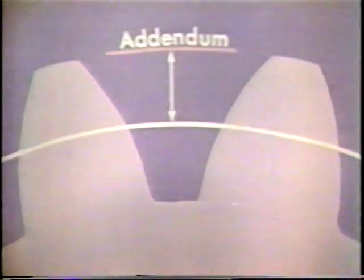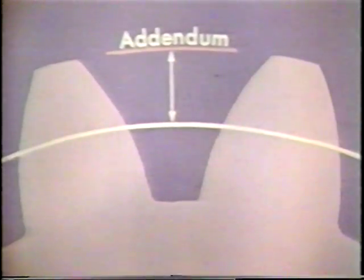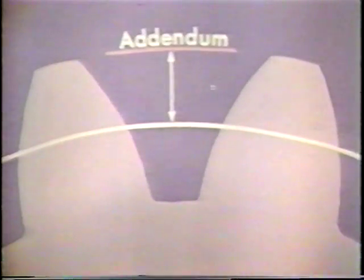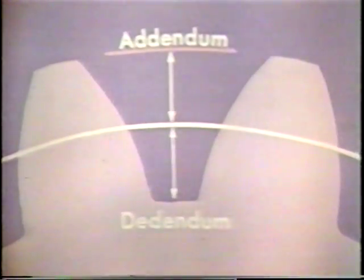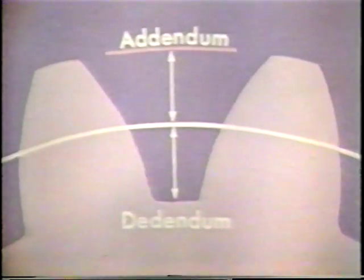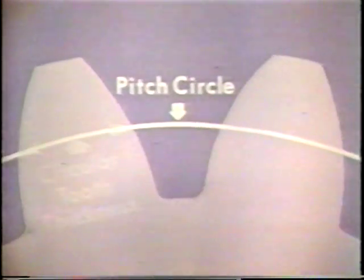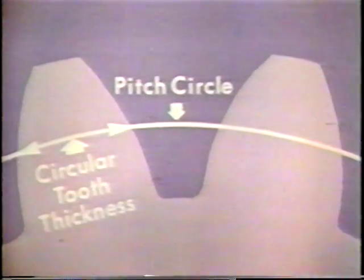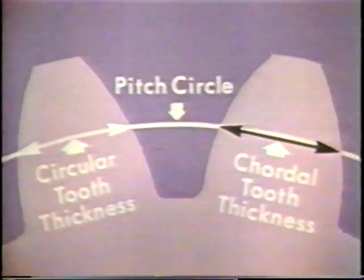The addendum is the radial distance from the pitch circle to the outside circle. For standard full length teeth, it is equal to the reciprocal of the diametral pitch, which is one divided by the diametral pitch. The dedendum is the radial distance from the pitch circle to the bottom of the tooth space. It equals addendum plus clearance. The circular tooth thickness of a standard gear is the length of arc between the two sides of a tooth as measured on the pitch circle. The chordal tooth thickness is the length of the chord subtending a circular thickness arc.